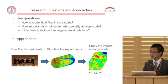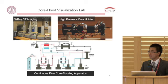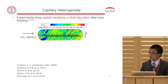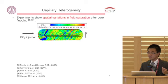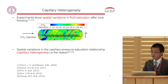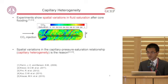The core flood visualization lab at Stanford University employs X-ray CT imaging to accurately measure fluid distribution inside the core. What I'm showing here is the CO2 saturation distribution map inside the core measured by CT scanner. CO2 saturation is the volume fraction of CO2 in the pore spaces. The red color indicates high CO2 saturation and blue indicates low, with saturation distributing in a very heterogeneous manner. We have experimental evidence and simulation results showing this is caused by spatial variation in the capillary pressure-saturation relationship, also called capillary heterogeneity. This means that to accurately model this core flood process, we need to account for capillary heterogeneity in our simulation.